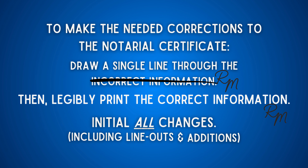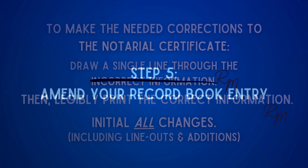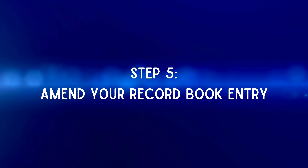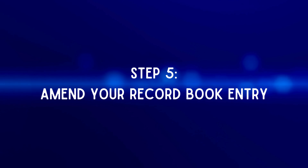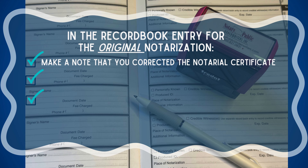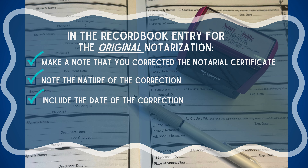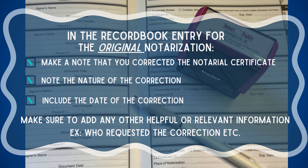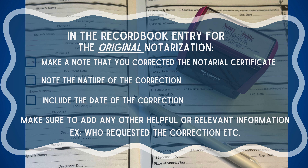In the record book entry for the original notarization, make a note that you corrected the notarial certificate, the nature of the correction, and the date of the correction. Add any other information you think is helpful, such as the party requesting the correction.